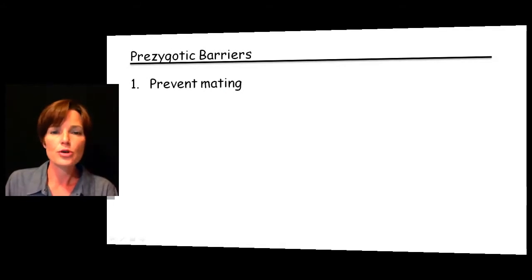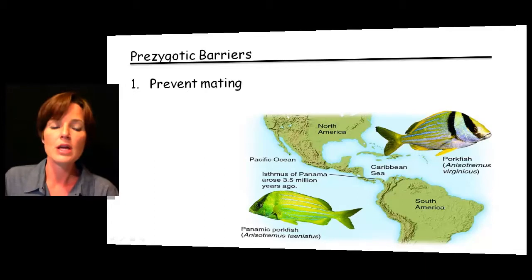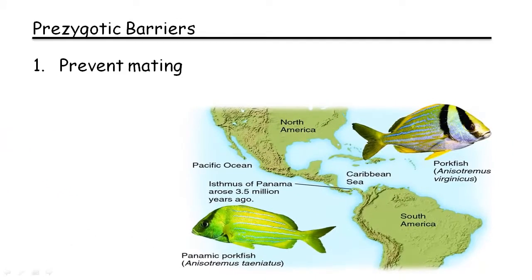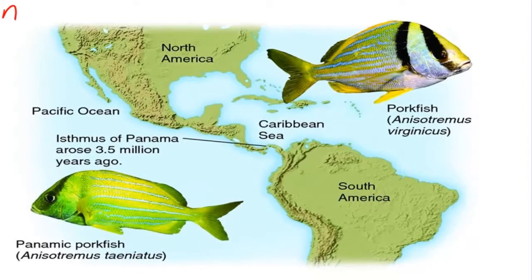Prezygotic barriers prevent mating from taking place. One example is what we call habitat isolation. These two fish look very similar to each other in the picture — you might think they're even variations of the same species, just with different colors. But these are isolated by living in different locations. There's a strip of land in between them, so since they are located in different places, they're not even going to come into contact with each other and have the opportunity to mate. We call these distinct species because they don't mate, as they're located in different places.